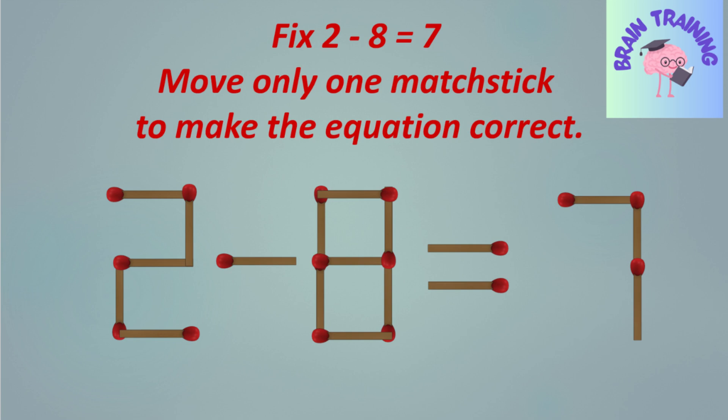The current equation is 2 minus 8 is equal to 7, and it's easy to spot the mistake. You will have 15 seconds to solve this puzzle.